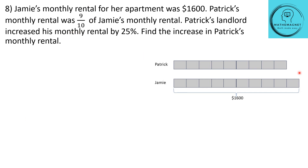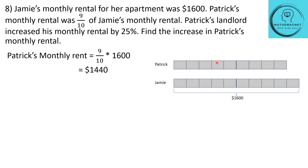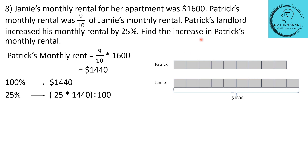Patrick is 9 units and Jamie is 10 units. 10 units is $1600, so Patrick's monthly rental will be 9/10 × 1600 = $1440. Patrick's landlord has increased his monthly rental by 25%. We know 100% is $1440. They ask us to find only the increase — not 125%, just the 25% increase. So 25% will be 25 × 1440 ÷ 100 = $360. He has to pay an additional $360 in monthly rent.